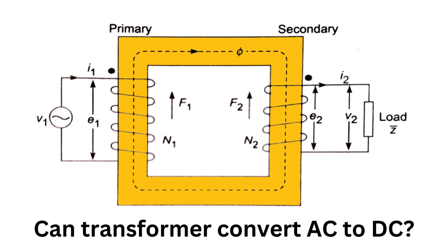A common type of rectifier is a diode rectifier, which uses a semiconductor diode to allow current to flow in only one direction.